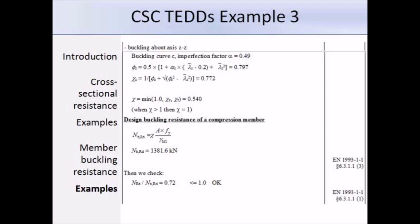We take the lowest reduction factor; if both were greater than 1 we would use 1, but here the governing value is χ = 0.54 about the y-axis. The design buckling resistance is 0.54 × area × fy / γM1 = 1381.6 kN. The ratio of design load to resistance is 0.72, which is less than 1, so the section is suitable.